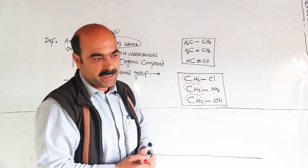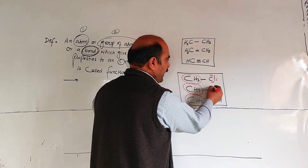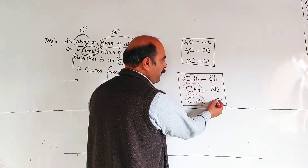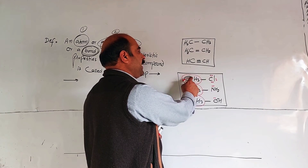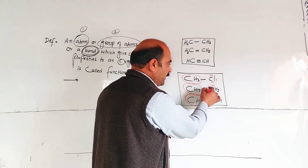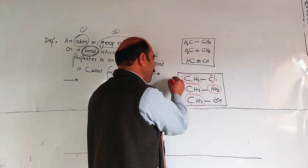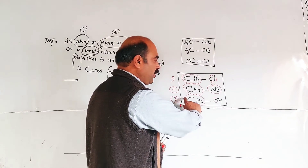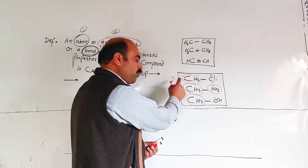The chlorine has a lone pair and carries a partial negative charge. Nitrogen also has a lone pair and carries a partial negative charge. Oxygen similarly has a lone pair with a partial negative charge. So chlorine gives a compound its reactivity. The amine group determines chemical reactions. Compounds number one, two, and three have different chemical reactivity and chemical properties based on their functional groups.